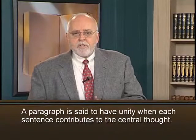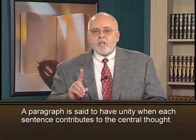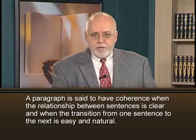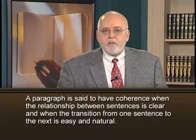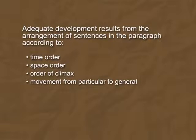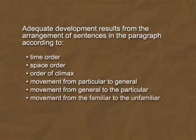A paragraph is said to have unity when each sentence contributes to the central thought; any sentence that violates the unity of the paragraph should be deleted. In expository writing, the main idea of a paragraph is most often stated in the first sentence. However, the statement of the controlling idea — often called the topic sentence — may appear anywhere in the paragraph, for example after an introductory transitional sentence or at the end of the paragraph. A paragraph is said to have coherence when the relationship between sentences is clear and when the transition from one sentence to the next is easy and natural. Adequate development results in part from the arrangement of sentences according to time order, space order, order of climax, or movement from particular to general, general to particular, or from the familiar to the unfamiliar.